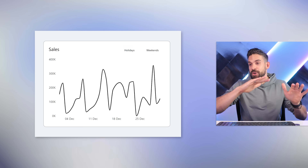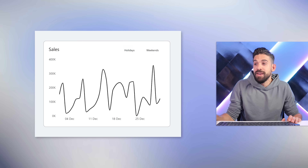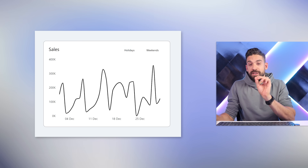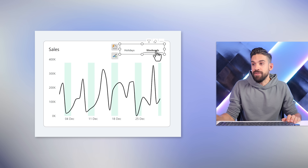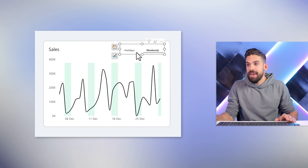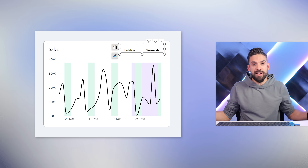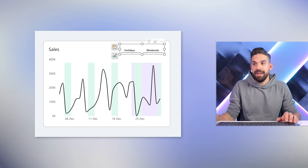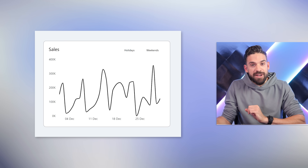The first example we are going to build is a line chart that shows the sales development over time, where the user can choose which custom periods should be highlighted. When I click on weekends, the weekend dates get highlighted, and I can also select the holidays — a totally custom period that also gets highlighted. And if I don't want that I can just hide it again. Let's start with a simple line chart.